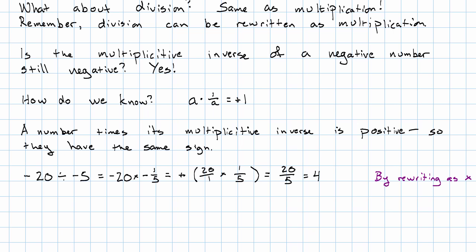But now that we know that division follows the same rules, we could just say negative 20 divided by 5 is positive. Divide the absolute values, 20 divided by 5 is 4.